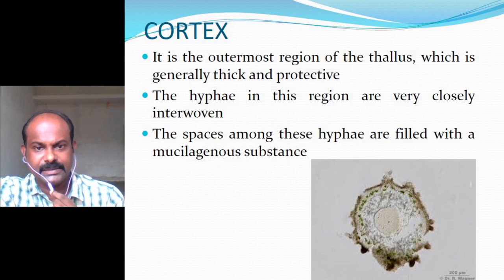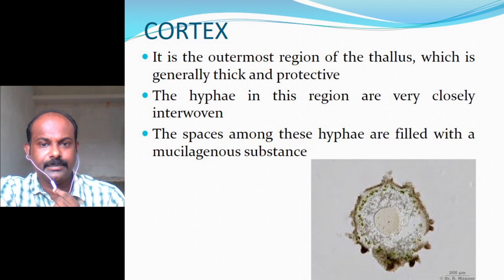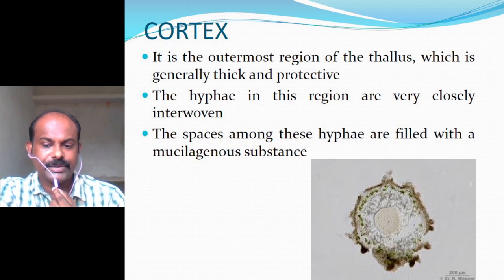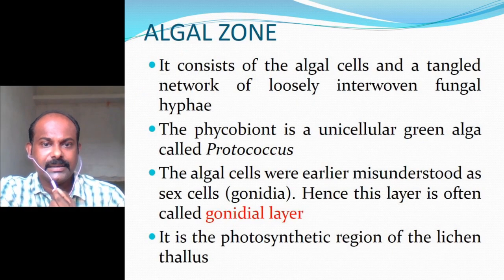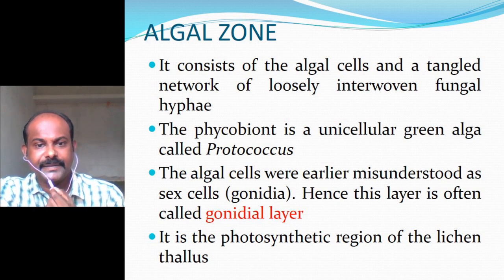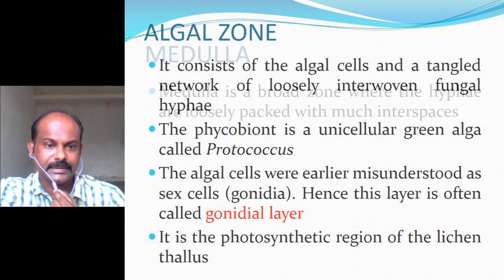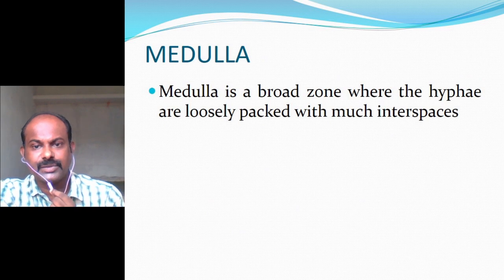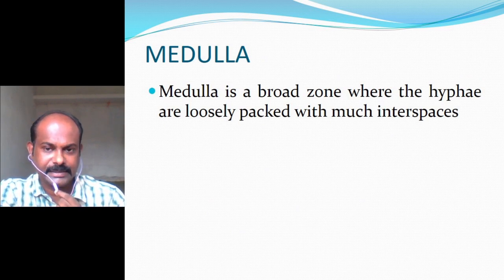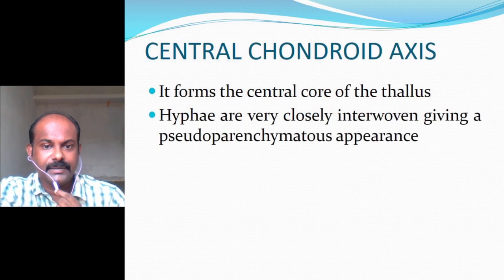Usnea is an example of a heteromerous lichen. The algal component is restricted to a specific zone called the algal zone. A cross section of the thallus shows cortex, algal zone, medulla, and a central chondroid axis. The cortex is the outermost region, generally thick and protective, with closely interwoven hyphae whose spaces are filled with a mucilaginous substance. The algal zone consists of algal cells and a tangled network of loosely interwoven fungal hyphae; the phycobiont is the unicellular green alga Protococcus. The medulla has loosely packed hyphae with much interspaces, and the central chondroid axis has very closely interwoven hyphae giving a pseudoplectenchyma appearance.